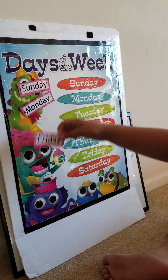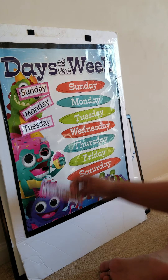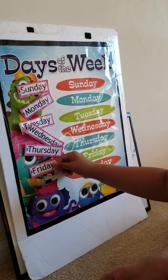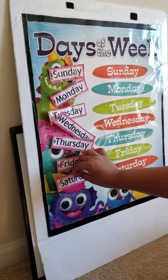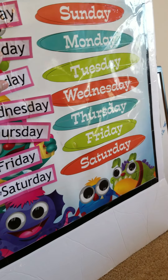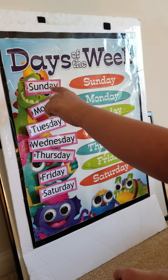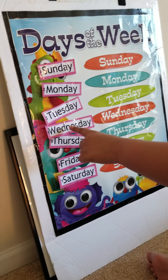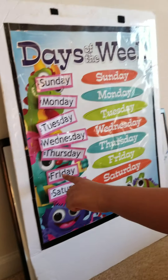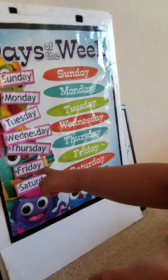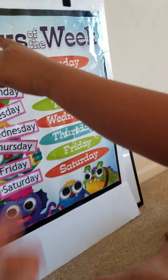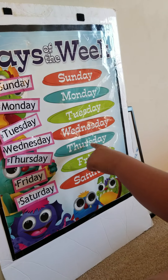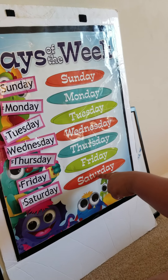Monday. Number three — Tuesday, Wednesday, Thursday, Friday, and Saturday. Okay, now let's read it. The days of the week: Sunday, Monday, Tuesday, Wednesday, Thursday, Friday, Saturday. Now read it over here — Sunday, Monday, Tuesday, Wednesday, Thursday, Friday, Saturday.